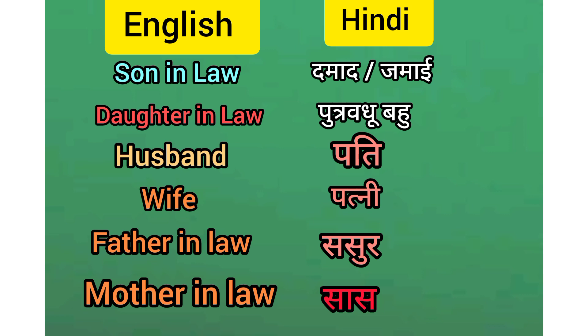Son-in-law — Damad, Jamai. Daughter-in-law — Putra Badhu or Bahu. Husband — Pati. Wife — Patni.